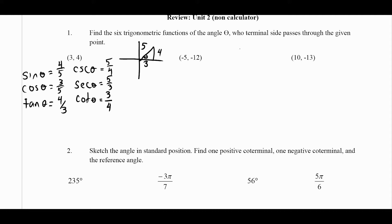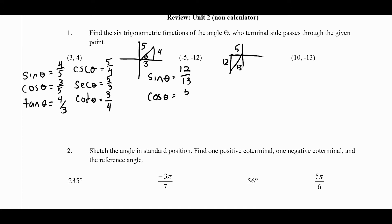For the next point, negative 5, negative 12 — so the triangle is going to be in the third quadrant, and this is a 5-12-13 Pythagorean triple. Sine of theta gives us 12 over 13, cosine of theta gives us 5 over 13, and tangent of theta gives us 12 over 5.